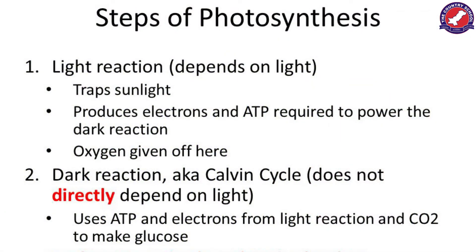Photosynthesis is a complex process with two stages. The first stage is the light-dependent reaction: photons from sunlight hit the plant's leaf, galvanizing the light-absorbing pigment chlorophyll and activating electrons, which divides water into oxygen and hydrogen ions. The second stage is the light-independent reaction, which uses energy from the first stage to convert carbon dioxide into glucose through a series of chemical reactions beginning with ribulose bisphosphate, ultimately producing glucose.